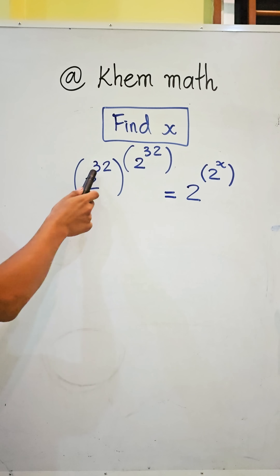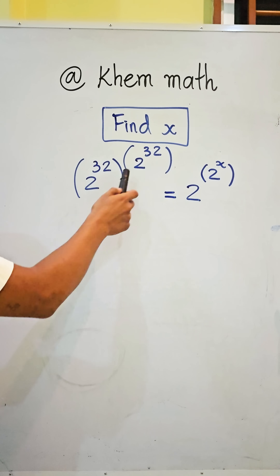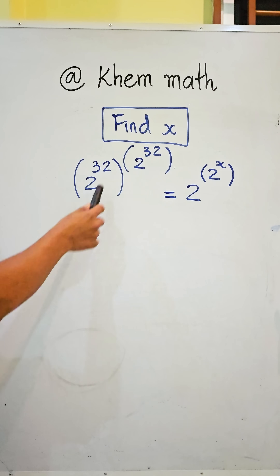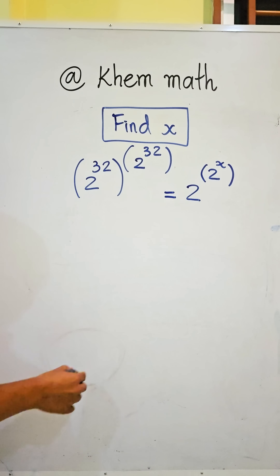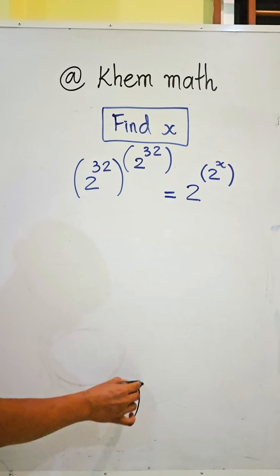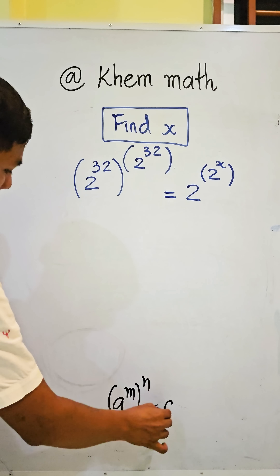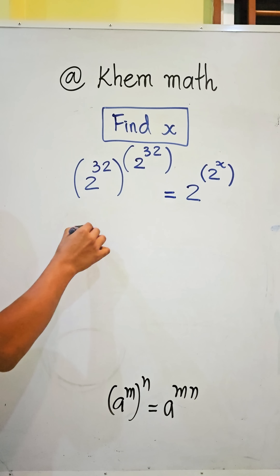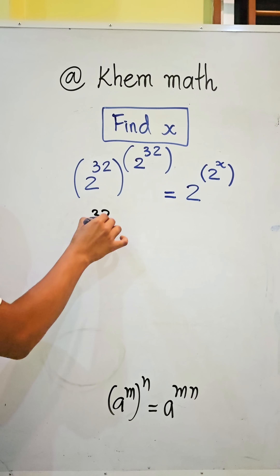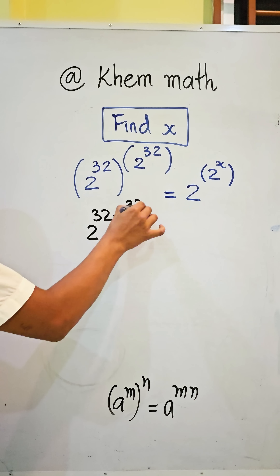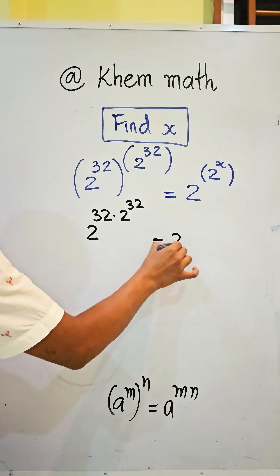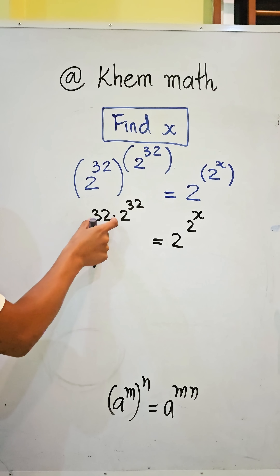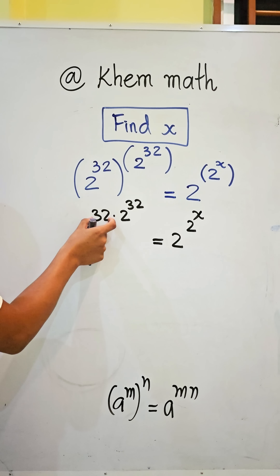We need to find the value given 2 power 32, all power 2 power 32, equal to 2 power 2 power 8. Here we apply the formula: (a^m)^n = a^(m times n). So we get 2 power 32 times 2 power 32 equal to 2 power 2 power 8.